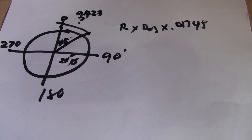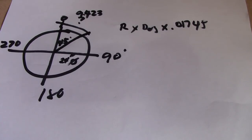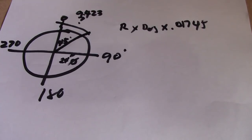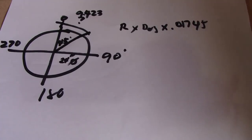That was our first formula. The next formula is: outside diameter × 3.1416 ÷ 360 × given degrees. This is our second formula — outside diameter multiplied by 3.1416, divided by 360 degrees, times the given degrees.